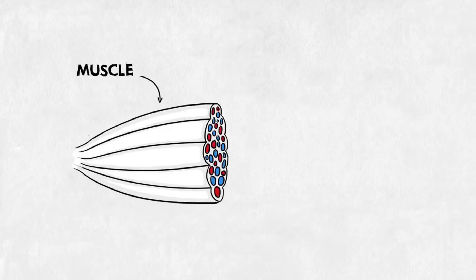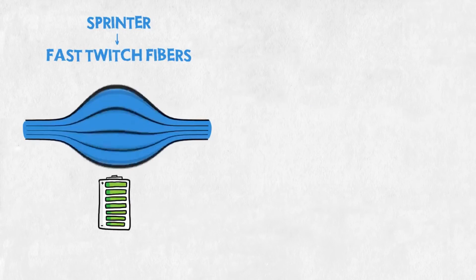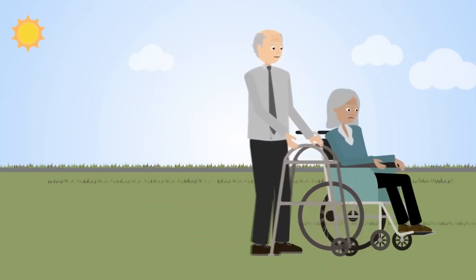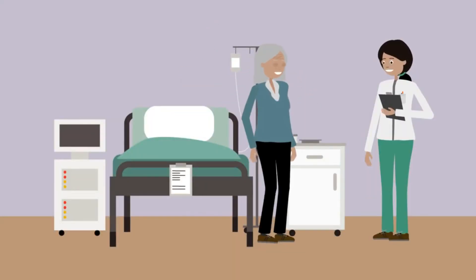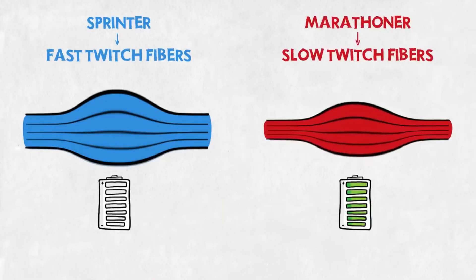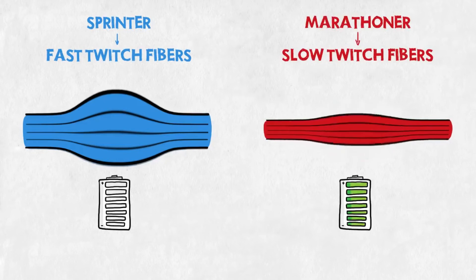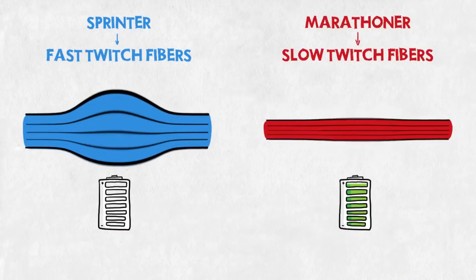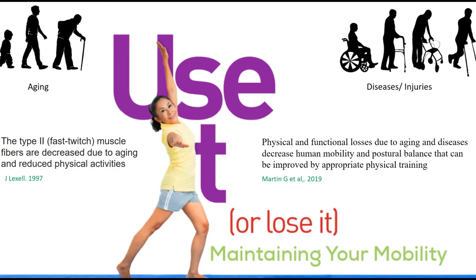According to Lexell, in 1997, the type 2 fast-twitch muscle fibers are decreased due to aging and reduced physical activities. Recently, Martin and colleagues, in 2019, stated that physical and functional losses due to aging and diseases decrease human mobility and postural balance, which can be improved by appropriate physical training. When compared to each other, type 1 fibers have a low threshold and a slower firing rate, and type 2 fibers have a higher threshold and firing rate. Type 2 fibers are recruited only after type 1 fibers as the task demands additional force and speed of movement. As we age or due to disease, we limit the proactive speed and force of muscle movements — a "use it or lose it" effect. We therefore need to safely practice movements and recruit both type 1 and type 2 fibers. By implementing reactive response training, we can force an elderly client to train to their maximum ability and use it.